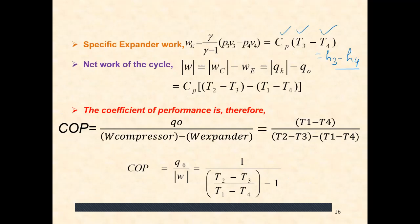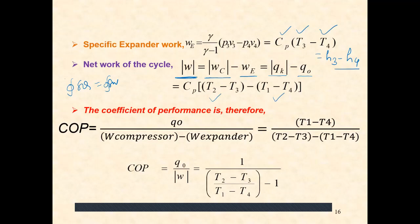The net work of the cycle W = WC − WE, since the work required for compression is more than the work obtained from the expander. This net work also equals QK − Q0, from the first law of thermodynamics, which states that the cyclic integral of delta Q equals the cyclic integral of delta W.